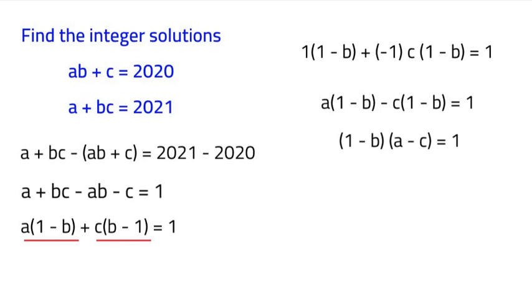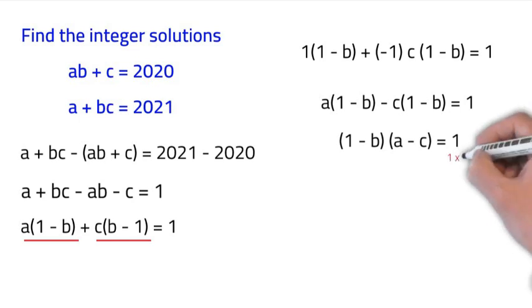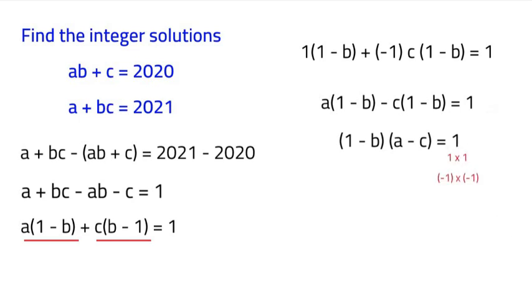Now, that is great because now we have two equations multiplying by each other. Which means if we find out what 1 is equal to, it's equal to either 1 times 1 or negative 1 times negative 1. So therefore, we have two different cases to find A, B, and C.